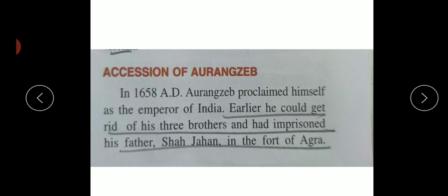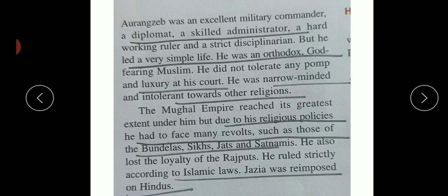Regarding Aurangzeb: in 1658, Aurangzeb became the Indian emperor. He did not work for long because three brothers and their father were held in the fort of Agra. He was an excellent military commander and a diplomat - meaning he showed a simple lifestyle. He was an orthodox, god-fearing Muslim who did not tolerate any pomp or luxury in the court, wanting to live a simple life because he believed God sees everything.